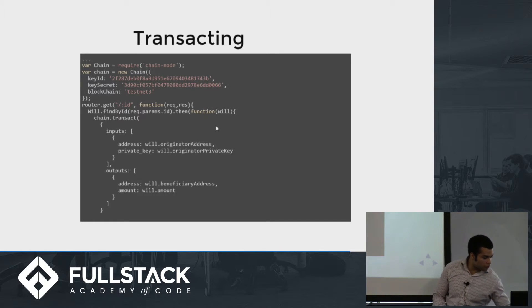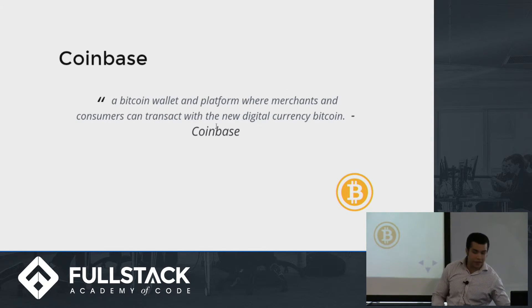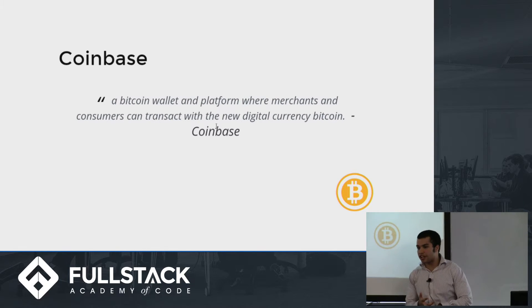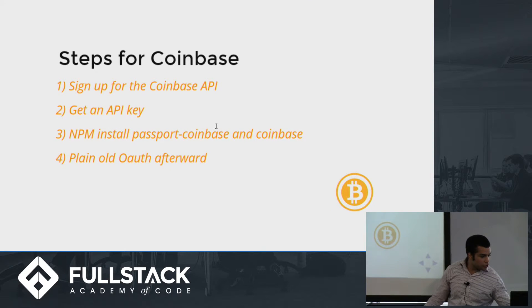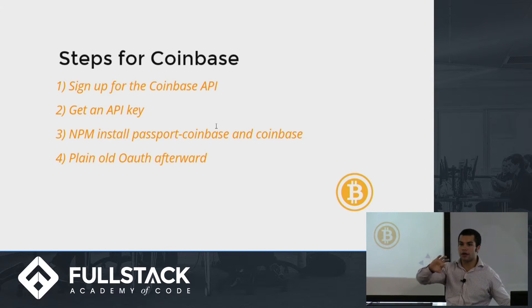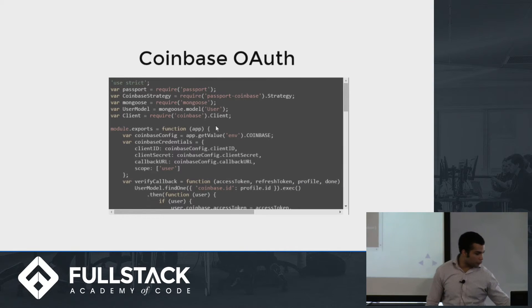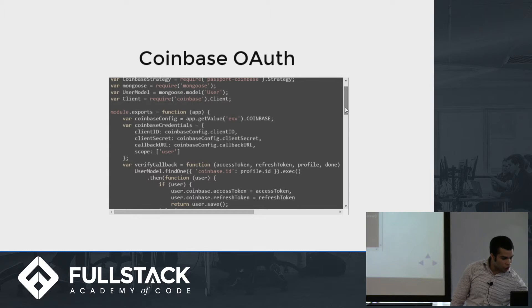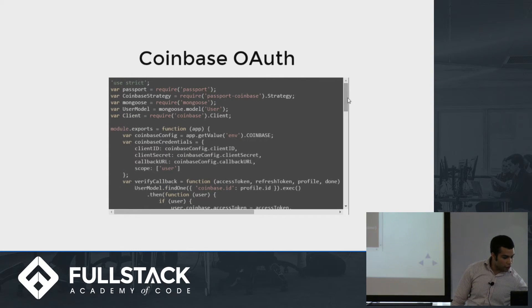Now let's talk about Coinbase. Coinbase is the biggest service right now — the most successful exchange for transacting Bitcoin. How do you use Coinbase? It's pretty similar to any other OAuth we've done before. You get an API key, NPM install the Coinbase package, and use plain old OAuth. This is the OAuth for Coinbase — it's pretty much just like a copy-and-paste of FSG OAuth with Coinbase. The only difference is you require Coinbase and make it a client.